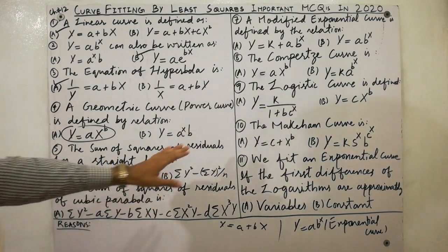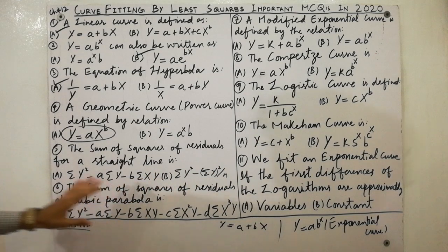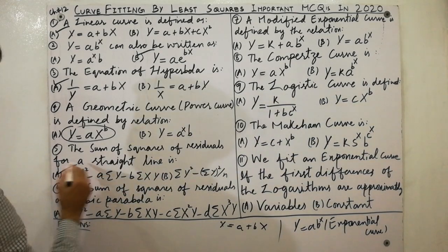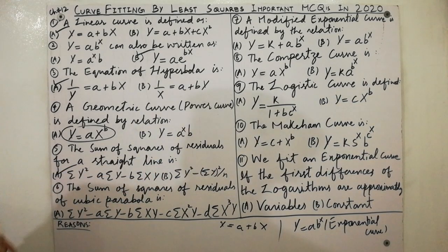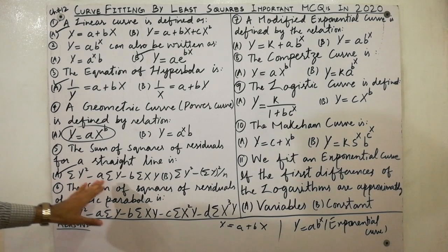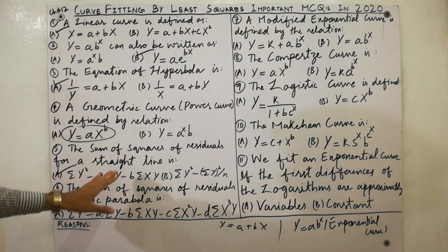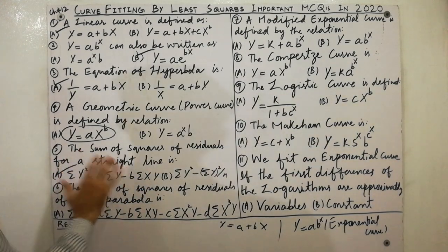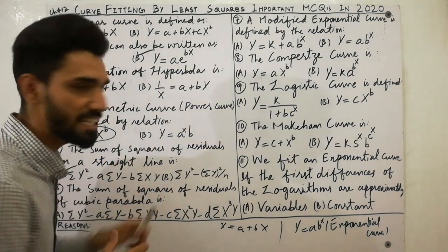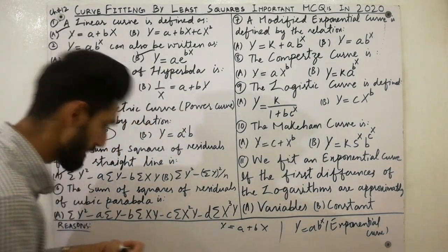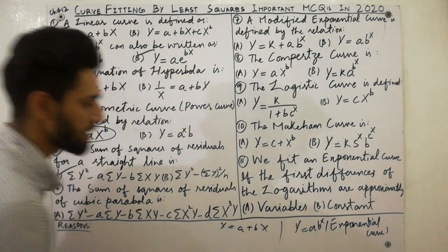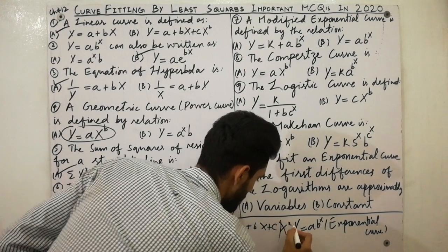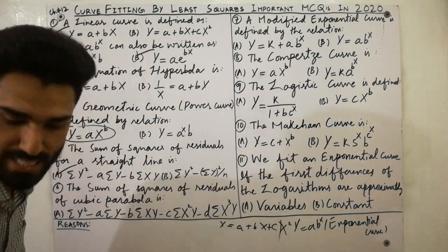The fifth point: the sum of squares of residuals for a straight line is Σy² minus a·Σy minus b·Σxy. For a second degree parabola, the equation is y is equal to a plus bx plus cx².